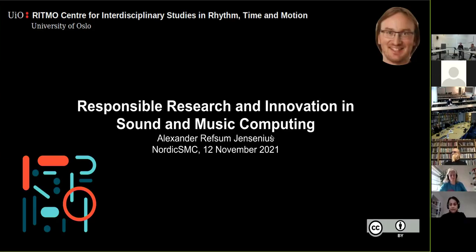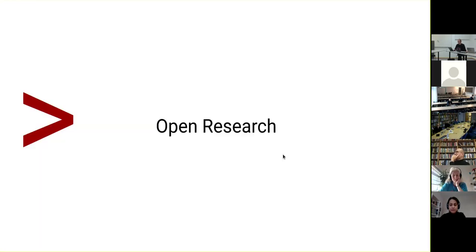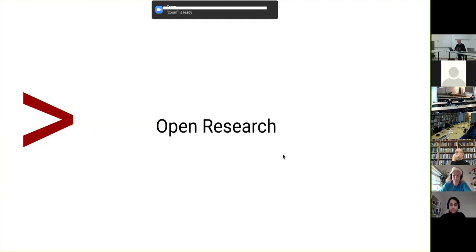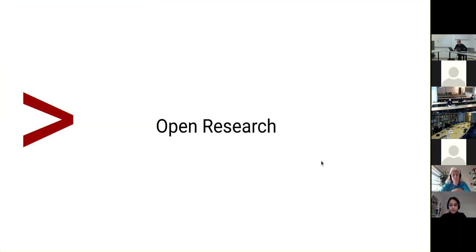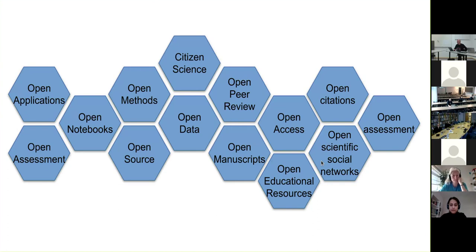I'll share my screen. My angle on this is what is politically called responsible research and innovation, which could be summarized as open research. That is the critical part of being able to do proper evaluation in the first place. You can think about the open research landscape as a collection of different bricks in a puzzle — on the left the application side when you apply for funding, in the middle the different components of doing research, and on the right the outputs.